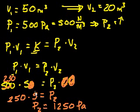So P2 is equal to 1250 pascals. When I decreased the volume by roughly 60%, the pressure actually increased by 2 and a half. So that gels with what we talked about before.